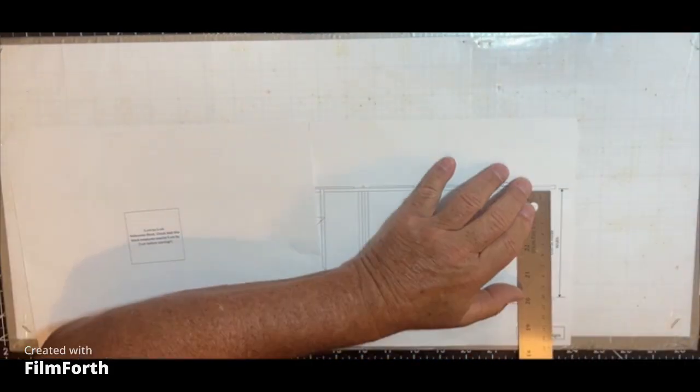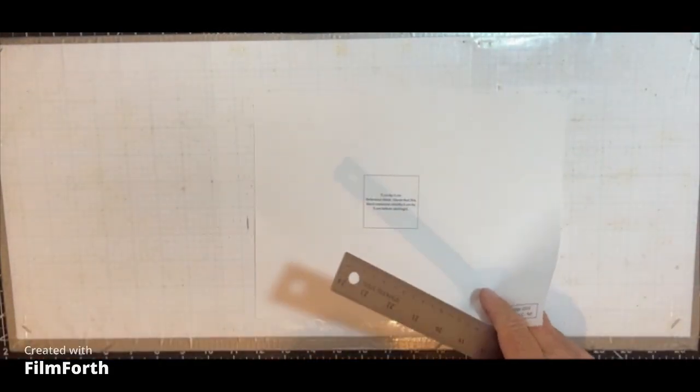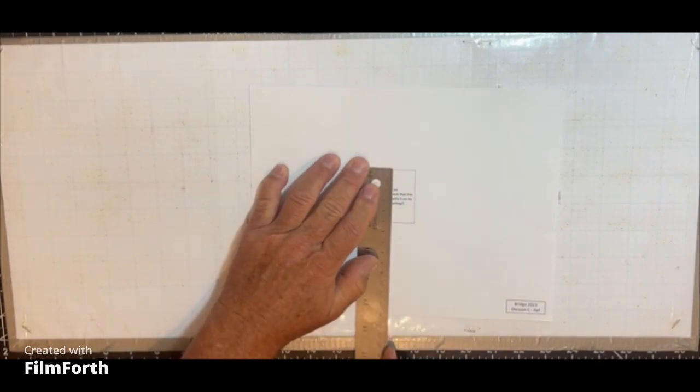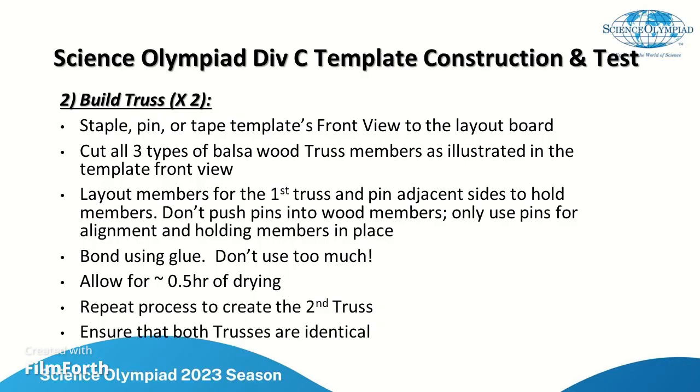Now there's also a little block that comes with this. I'm going to make sure that it's 5 by 5 centimeters as well. Starting with the front view template, we'll lay that out onto the board and using that illustration we'll cut all the needed members, then start cutting, piecing, and gluing all those members to form the truss. We'll need to do this twice to create two trusses needed for this bridge.